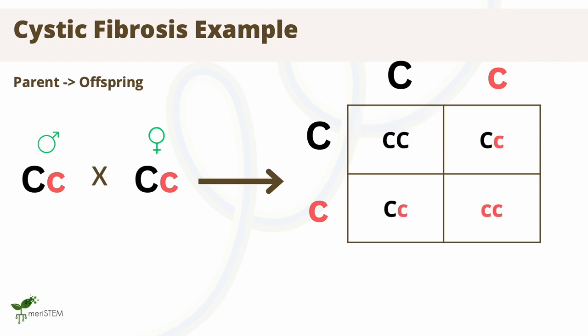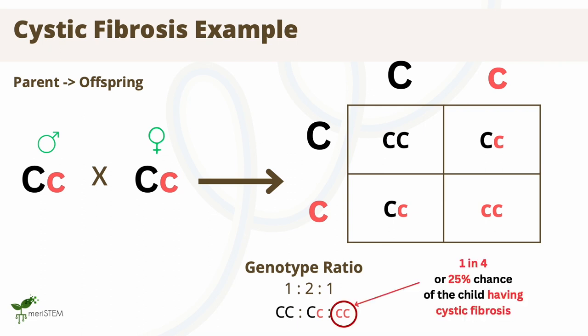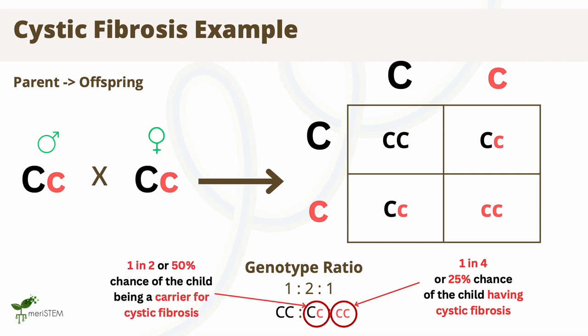If we draw out the Punnett square, we get a genotype ratio of 1 to 2 to 1. Since cystic fibrosis is a recessive condition, inheritance of the genotype little c, little c would cause the development of the condition. This means that there is a 1 in 4, or 25% chance of the offspring inheriting the condition. There is also a 1 in 2, or 50% chance of them being a carrier.